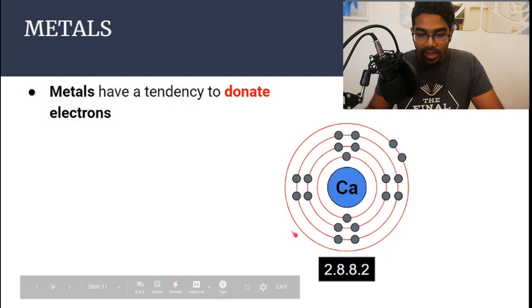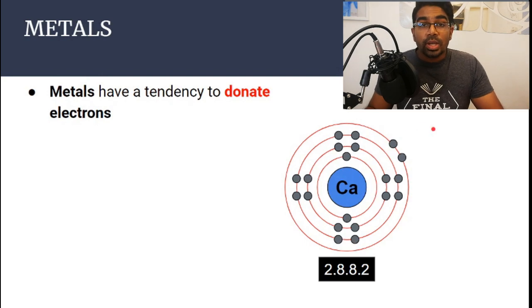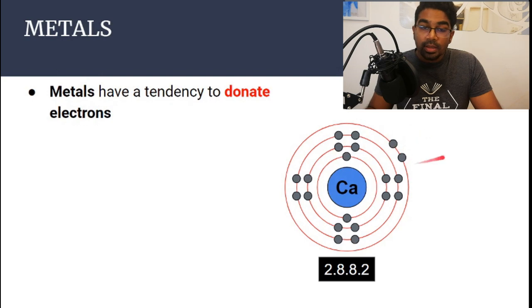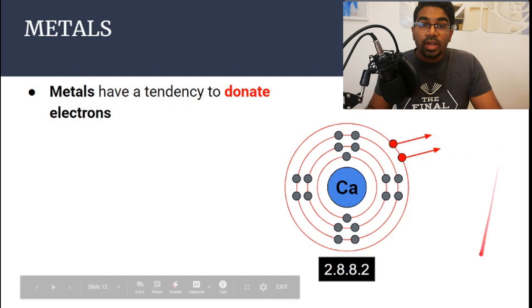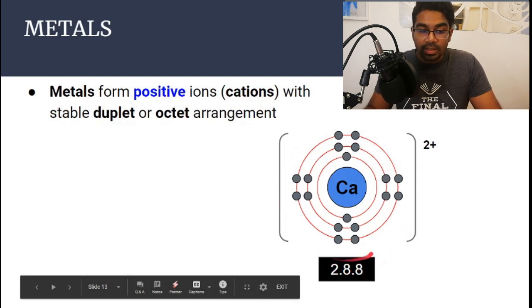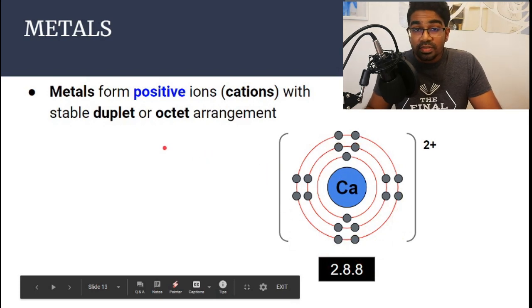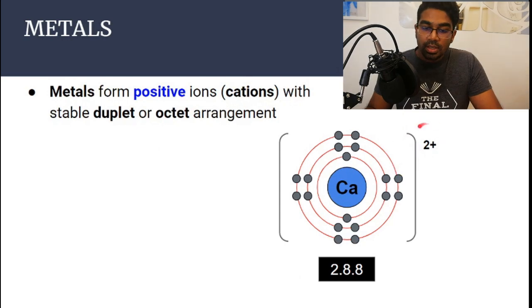Calcium has two valence electrons and the electron configuration 2-8-8-2. To achieve the octet arrangement, it gives away both valence electrons, resulting in a 2-8-8 configuration. Since calcium gave away two electrons, it has a charge of 2+. Metals form positive ions, also known as cations.